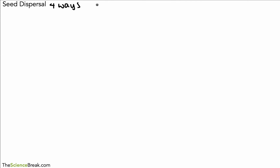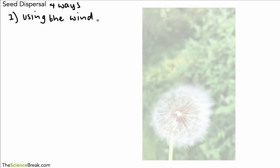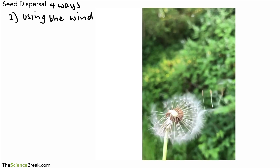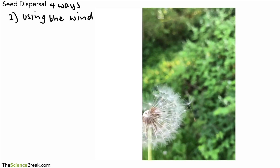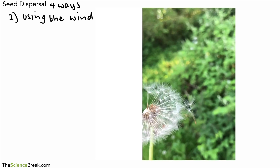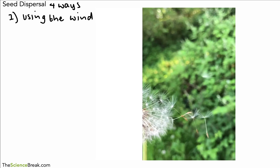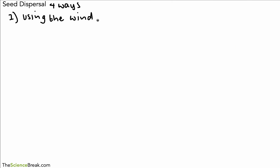The first method is when plants use the wind. A very common and easy example is the dandelion — I'm sure you've all done this before. Here's a dandelion with all the seeds, and the wind will come along and blow the seeds off the plant, and away they go to be spread far and wide, carried by the wind.